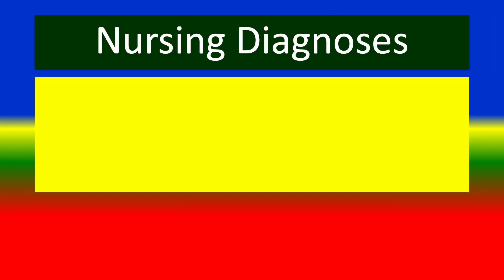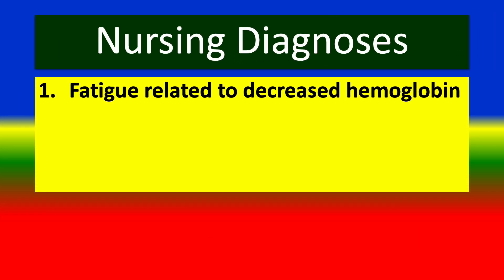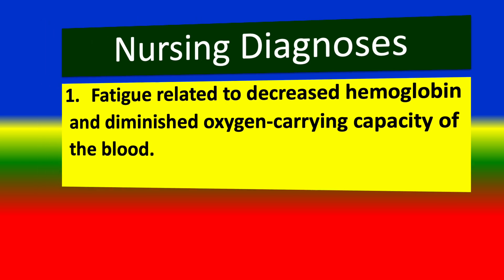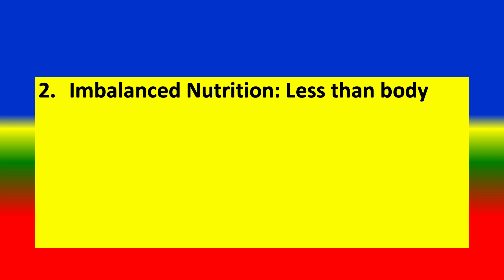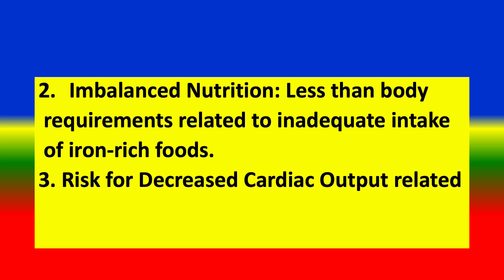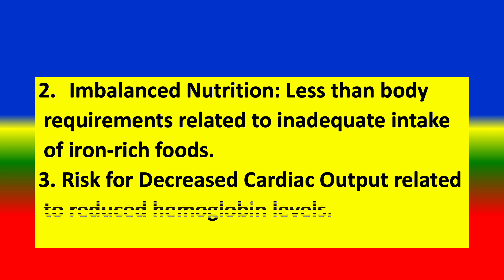Nursing diagnoses include: first, fatigue related to decreased hemoglobin and diminished oxygen-carrying capacity of the blood; second, imbalanced nutrition less than body requirements related to inadequate intake of iron-rich foods; and third, risk for decreased cardiac output related to reduced hemoglobin levels.